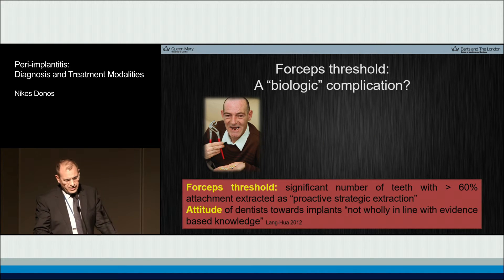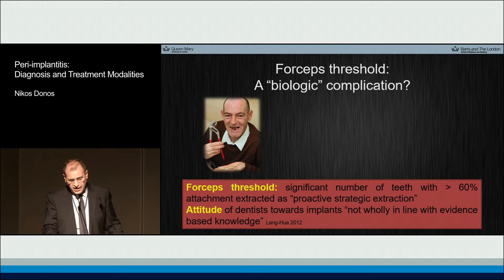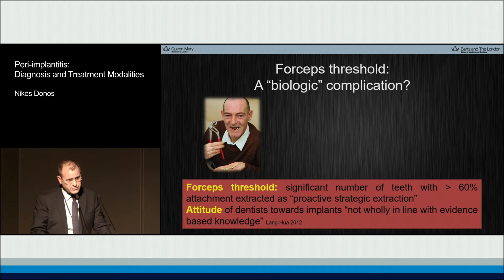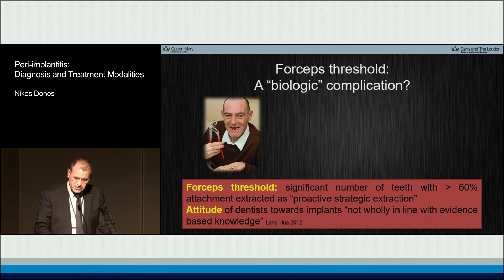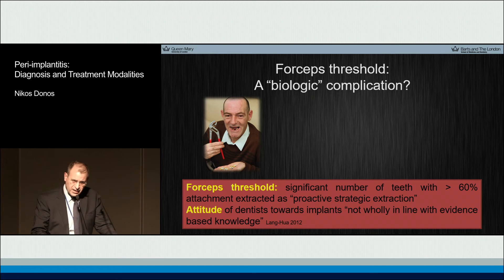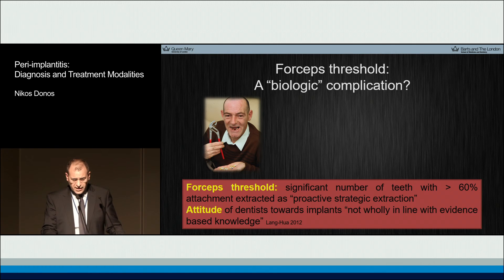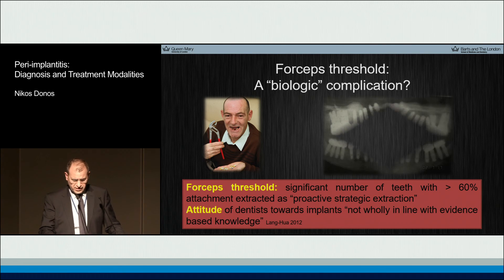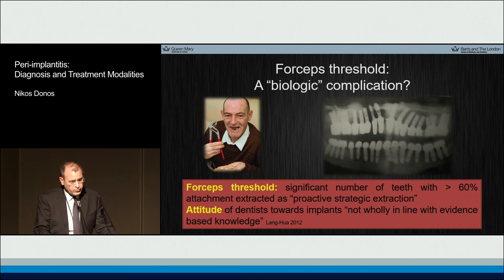Furthermore, when we discuss today about extraction of teeth and placement of the implant, we need to discuss a statement called the forceps threshold. The forceps threshold is the point that a dentist has before they make a decision that the tooth should not be in position any longer and should be extracted. Very often the biological complications are a problem because of the easy decision that we make for extractions. We know from the literature that unfortunately dentists who are working in an environment